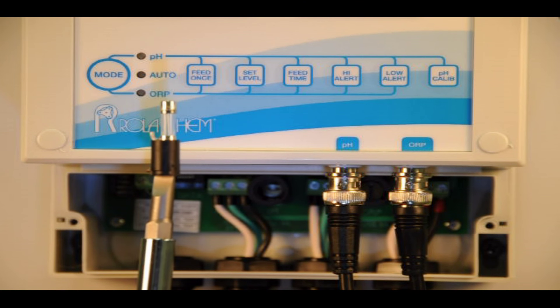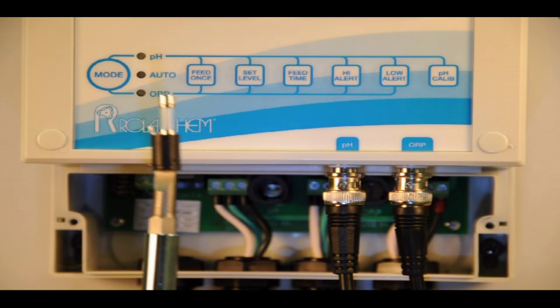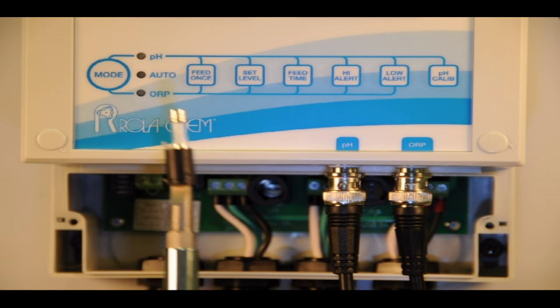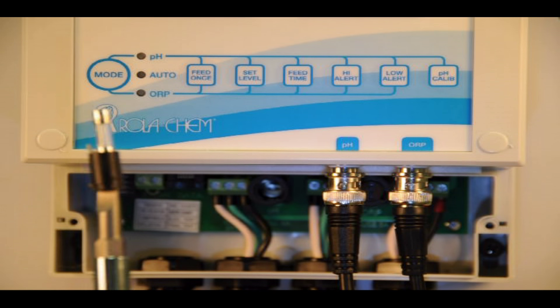One trick you could do is if you had one that was working, say the ORP was working and the pH was not, what you could do is flip-flop the fuses. If the pH works and the ORP doesn't, you probably have a bad fuse.